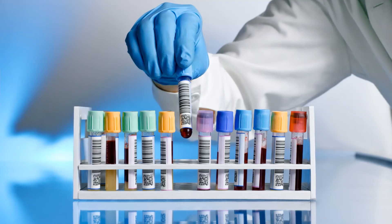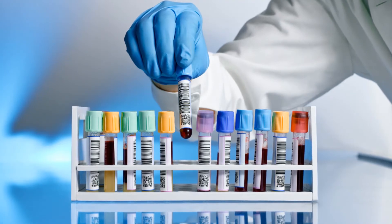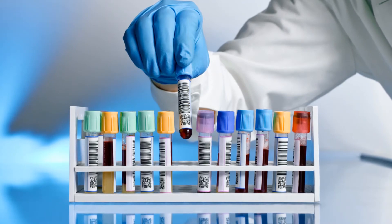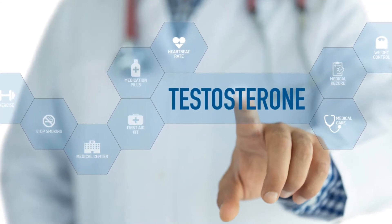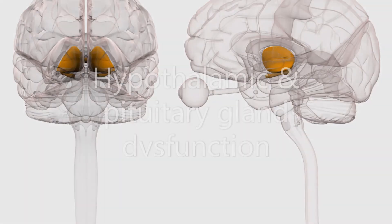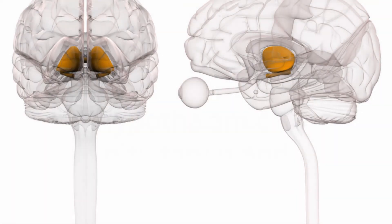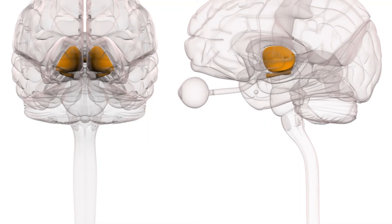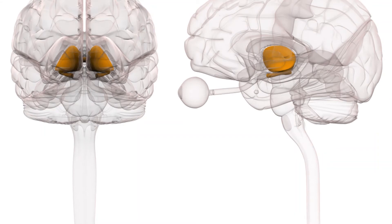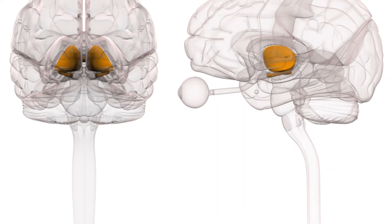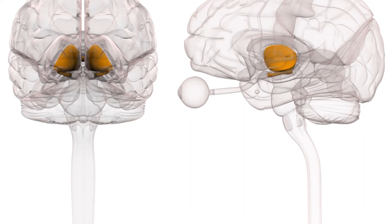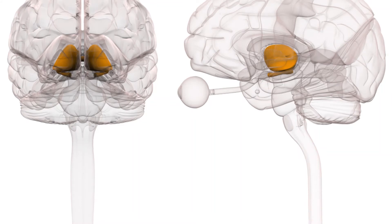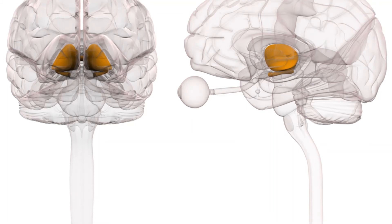Hormonal infertility: gonadotropin-releasing hormone, follicle-stimulating hormone, and luteinizing hormone are essential hormones for reproduction. These chemical messengers control testosterone and sperm production. Kallmann syndrome is a rare genetic condition where the hypothalamus fails to release gonadotropin-releasing hormone. Benign tumors of the pituitary gland disrupt its normal response to gonadotropin-releasing hormone stimulation. In both cases, FSH and LH aren't released in sufficient amounts, leading to a lower sperm count and decreased production of testosterone, ultimately causing male fertility issues.